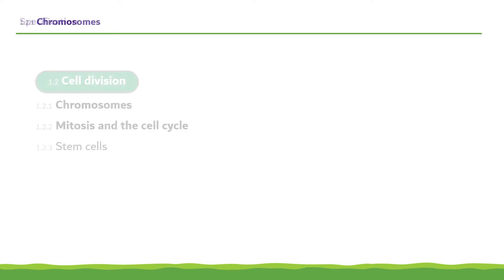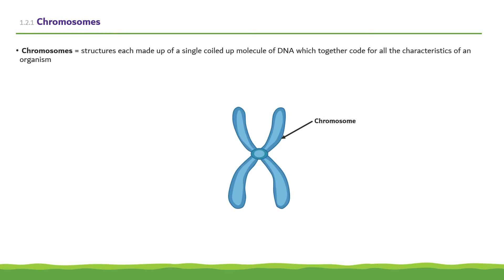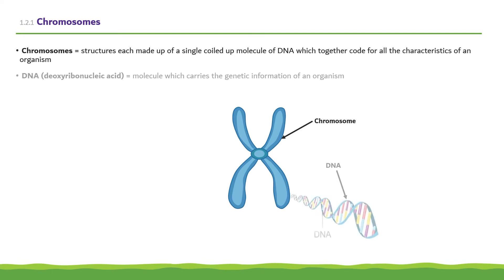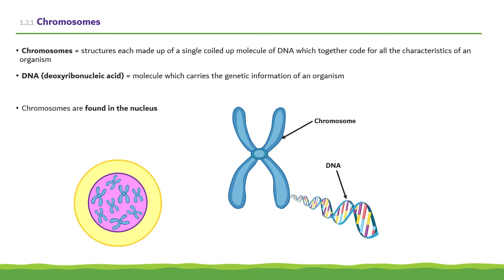Starting off with Chromosomes. Chromosomes are structures each made up of a single coiled up molecule of DNA, which together code for all the characteristics of an organism. DNA, or deoxyribonucleic acid, is a molecule which carries the genetic information of an organism. Chromosomes are found within the nucleus, with each one carrying a large number of genes.